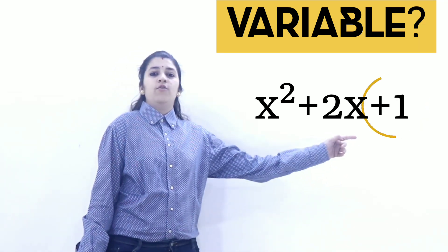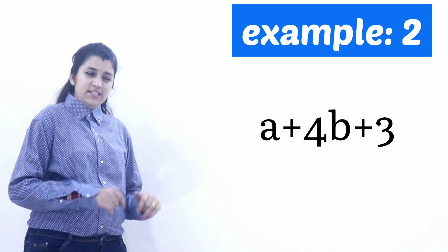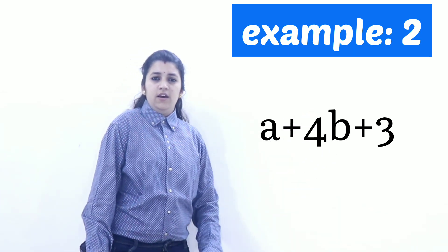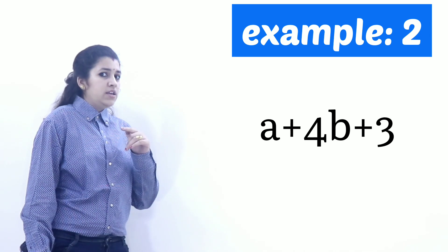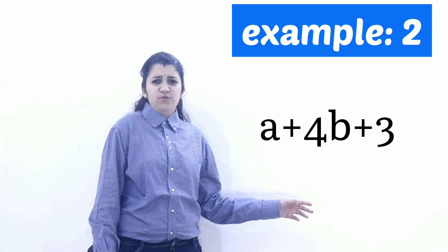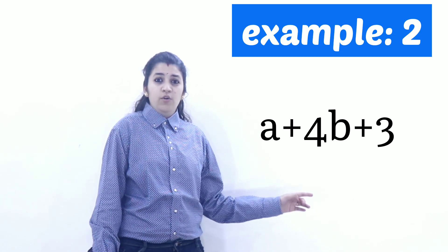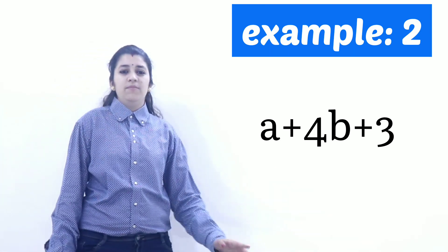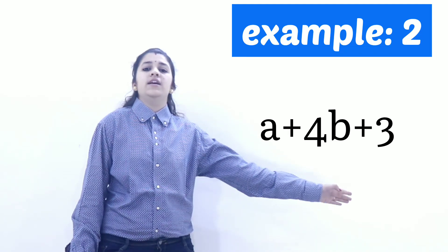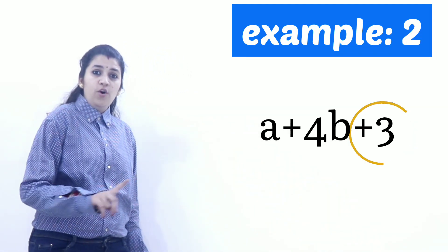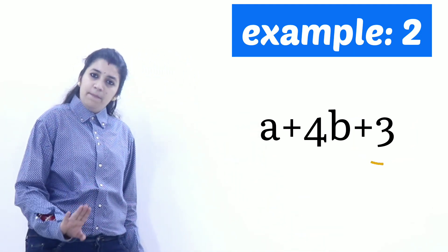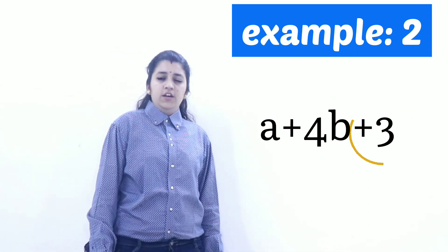In the expression x squared plus 2x plus 1, the constant term is 1. Let's take another example: a plus 4b plus 3. Many students might say the constant is 4b — but no, 4 is with the variable b, so it is not a constant. The constant term here is 3, because it has no variable attached. Constant terms are individual numbers only in algebraic expressions.